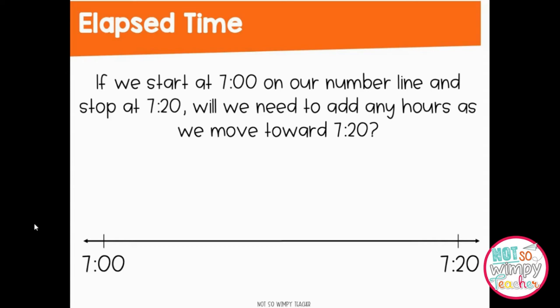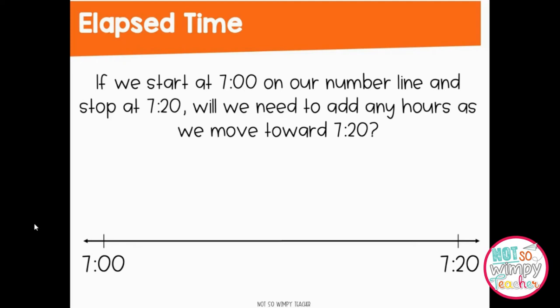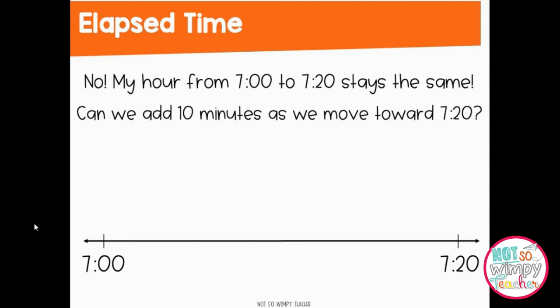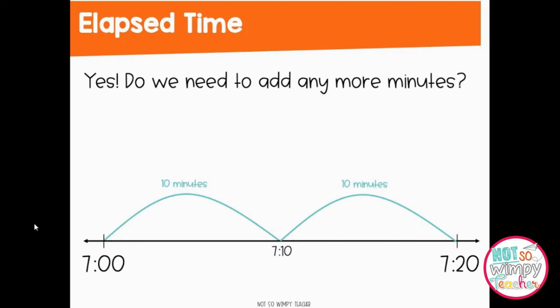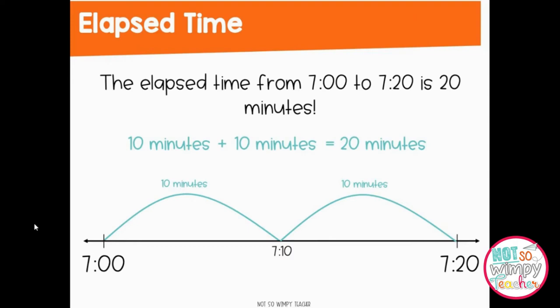The first thing students need to realize is the volume of time they need to move. For example, going from 7 to 7:20, you do not need to add any hours. Now we need to think about the increment of time we can move in — 30 minutes would be too large of a jump, so a lot of students will suggest jumping in 10 minutes. Here you can see it takes two jumps of 10 minutes to get to 7:20, and then you can reinforce that with the addition: 10 minutes plus 10 minutes equals 20 minutes. A lot of your students might jump ahead and say they can represent this in a jump of 20 minutes, and that's a-okay. That's what I love about this strategy — it's super accessible for all of your students. They can do jumps as big or as small as they need to get to the time they're aiming for.